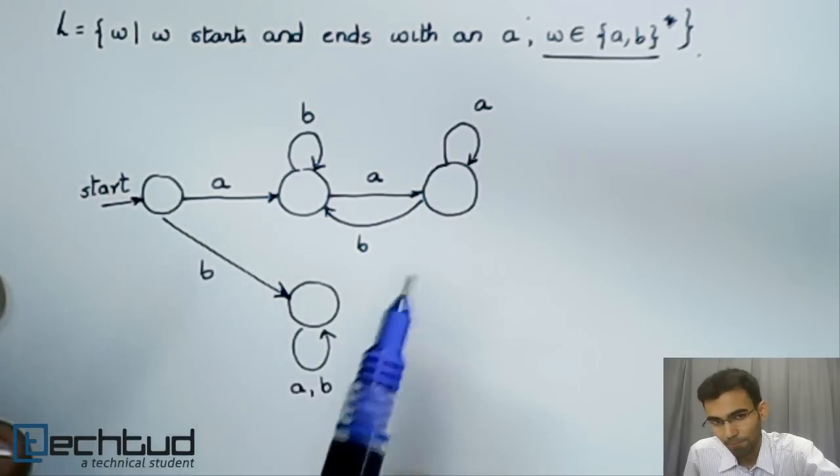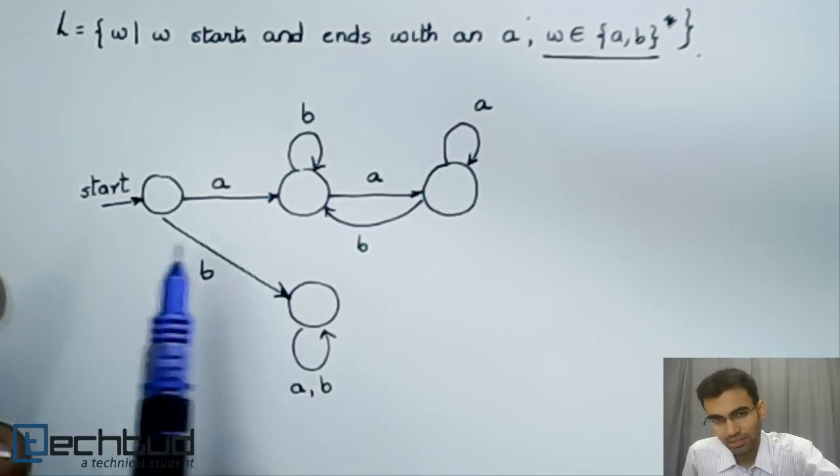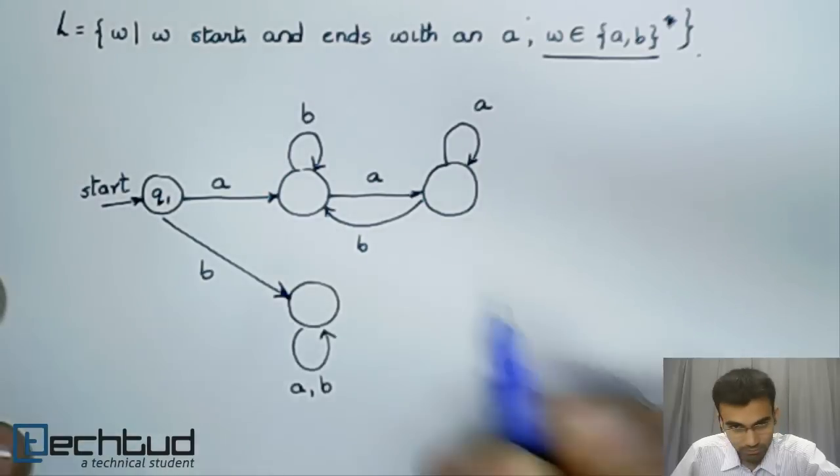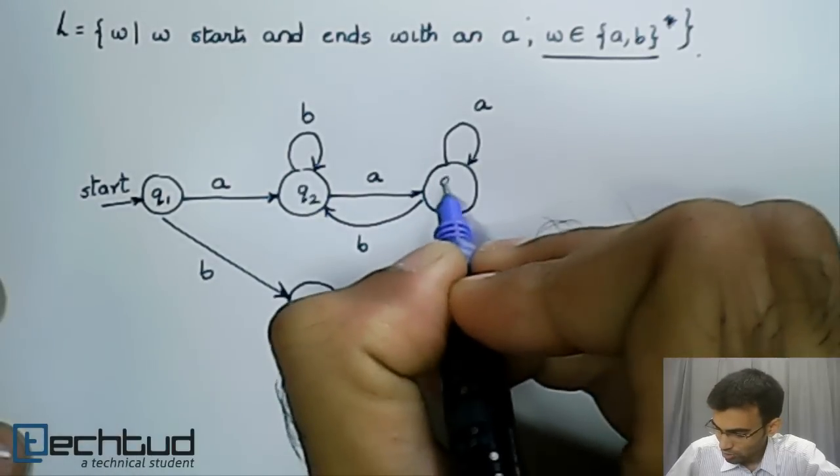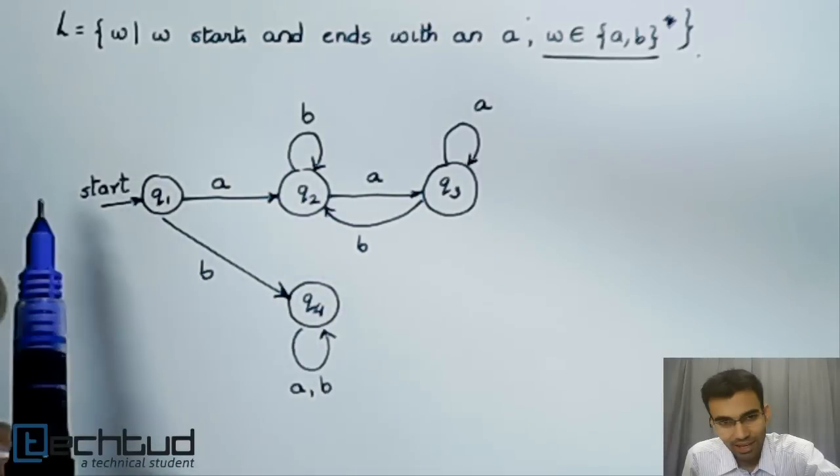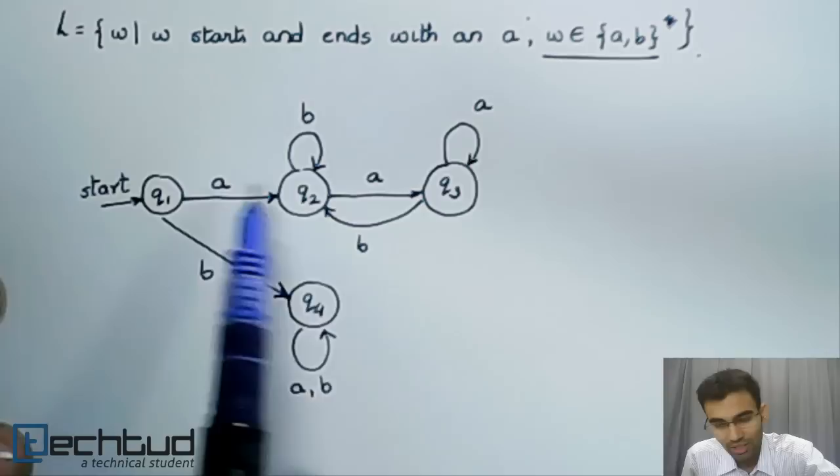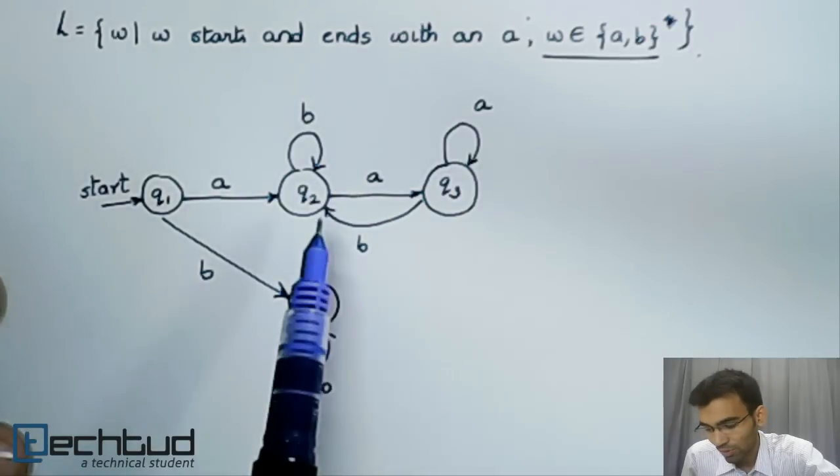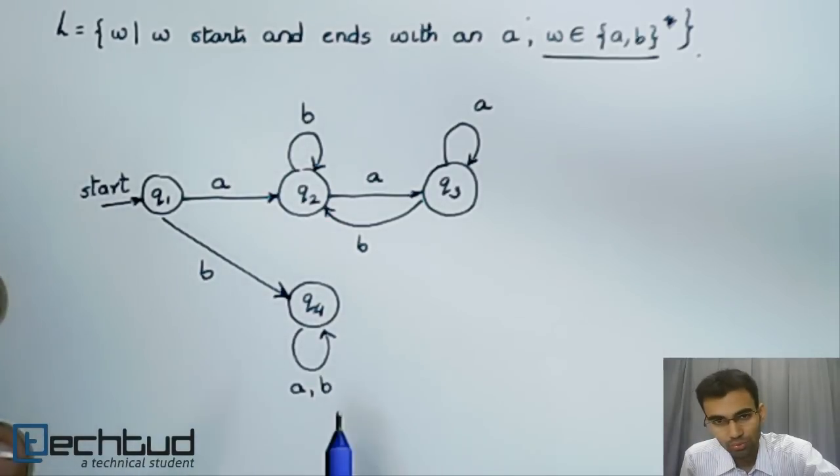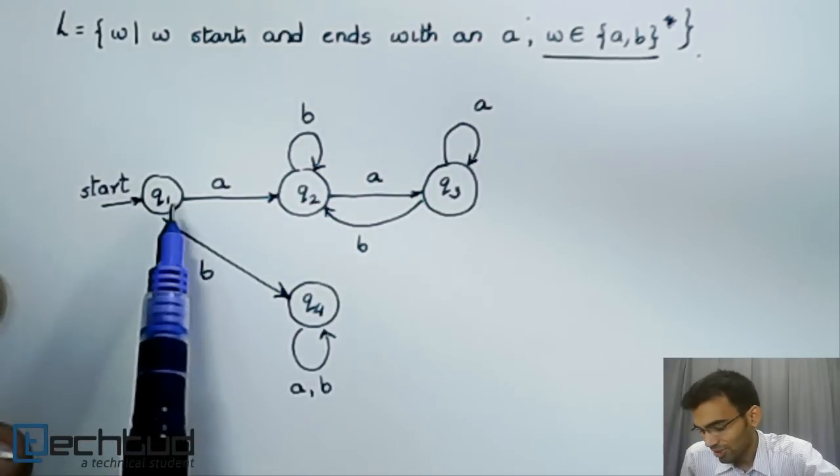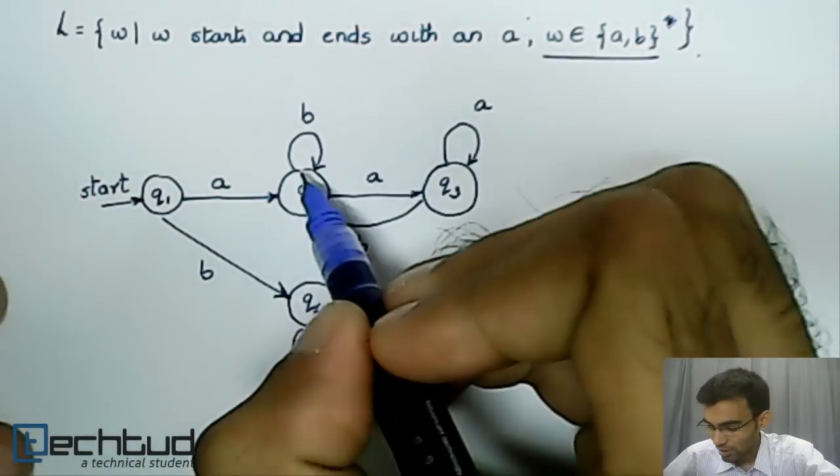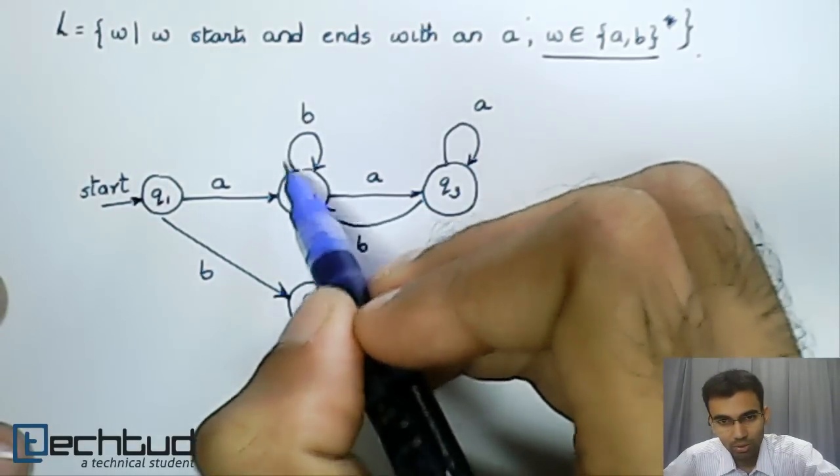So the state space for this is the following. You have Q1, Q2, Q3, and Q4. These states are labeled with transitions. The transitions are labeled with letters from the alphabet, that is A and B. You have transitions taking you from one state to a distinctly different state. You have transitions taking you and looping around on the same state.